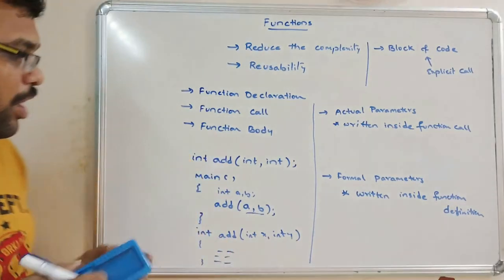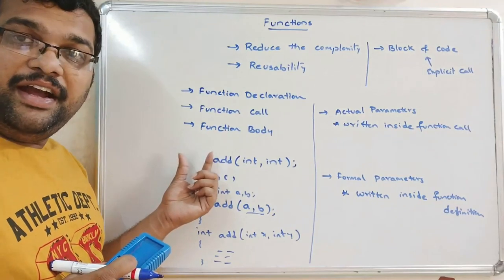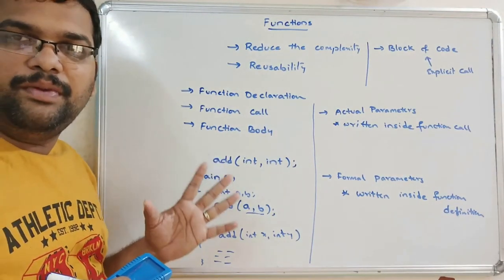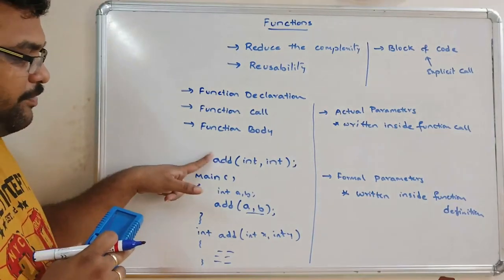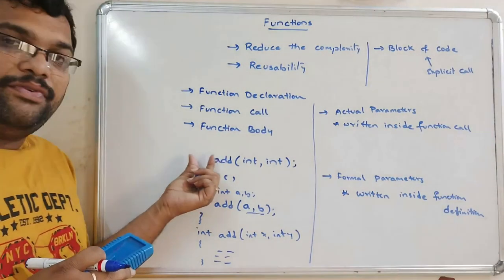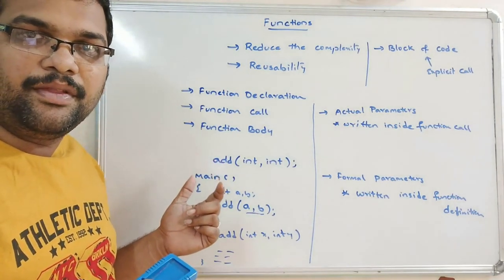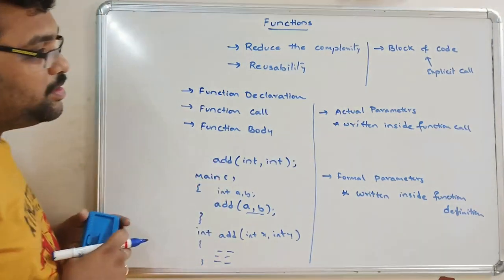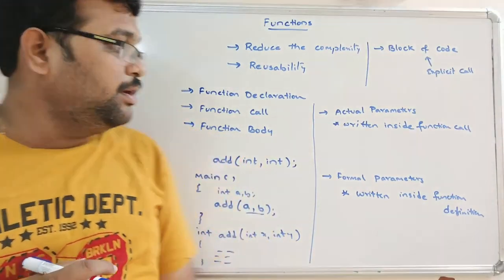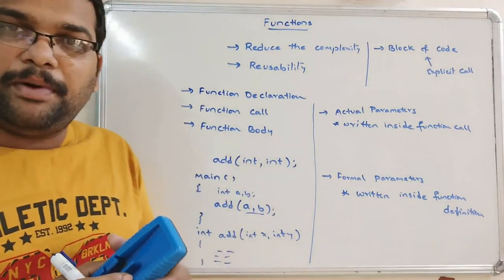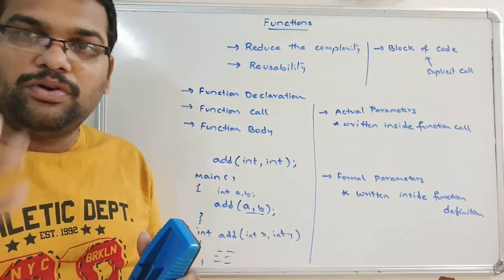If you are not mentioning any return type, it will be treated as integer by default. This is all about the function introduction. Hope you understood this — we will now move on to see the implementation part of the functions concept. Let us move to the compiler.